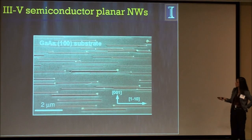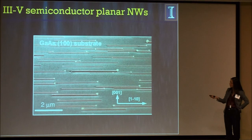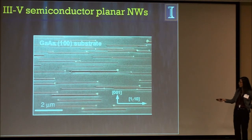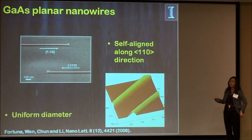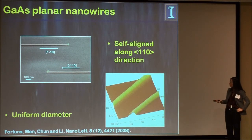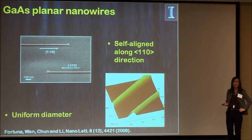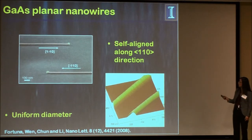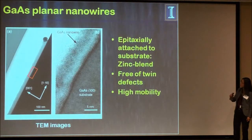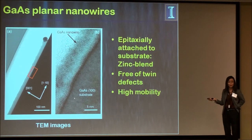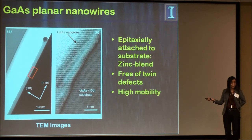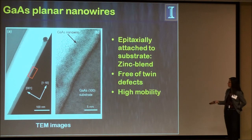We found a growth condition where wires propagate along the plane laterally instead of going out of plane. Here's the result: with randomly dispersed gold particles of different sizes, all the wires are parallel and aligned in the ⟨110⟩ crystal direction. In a zoomed image, wires are parallel or anti-parallel because the two crystal orientations are equivalent — effectively giving two directions. Here's an AFM image showing the wire sitting on and epitaxially extending the substrate crystal lattice. This is a GaAs 100 substrate with a GaAs nanowire, and we do not have twin-plane defects in this direction.